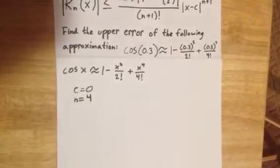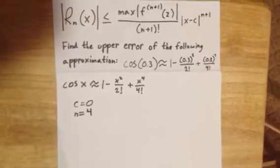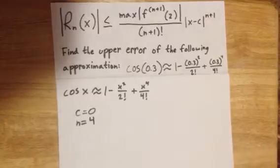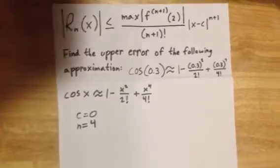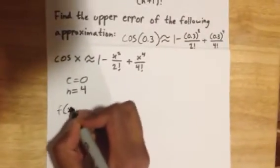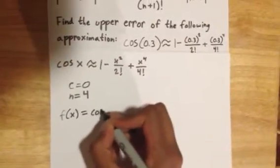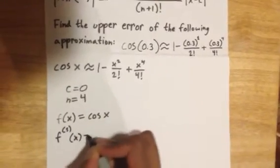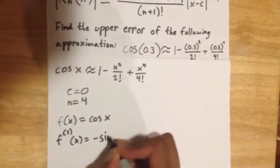Now we need to find our fifth derivative because we have the fifth derivative of the function in our formula. Since f(x) = cos(x), the fifth derivative f⁽⁵⁾(x) = -sin(x).